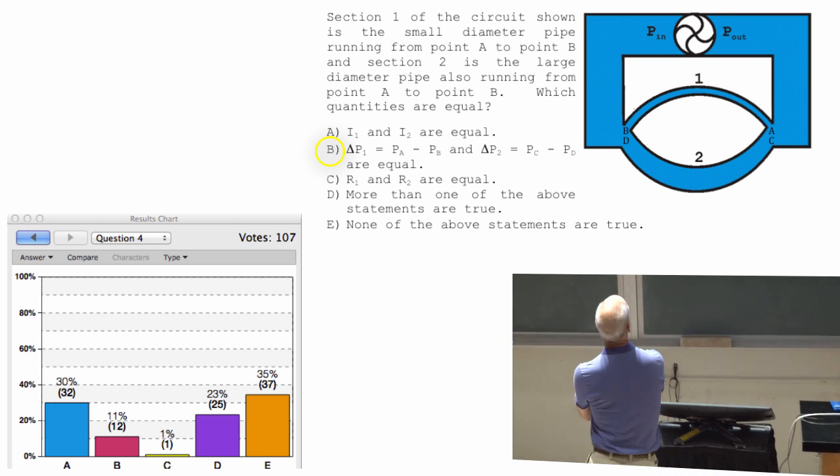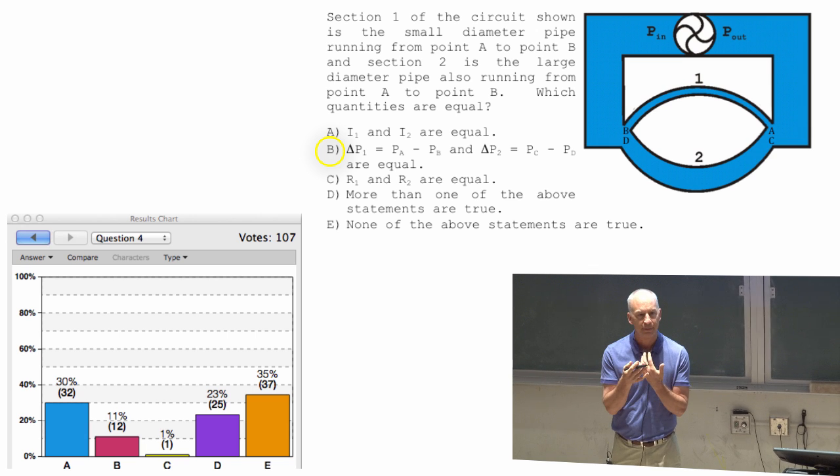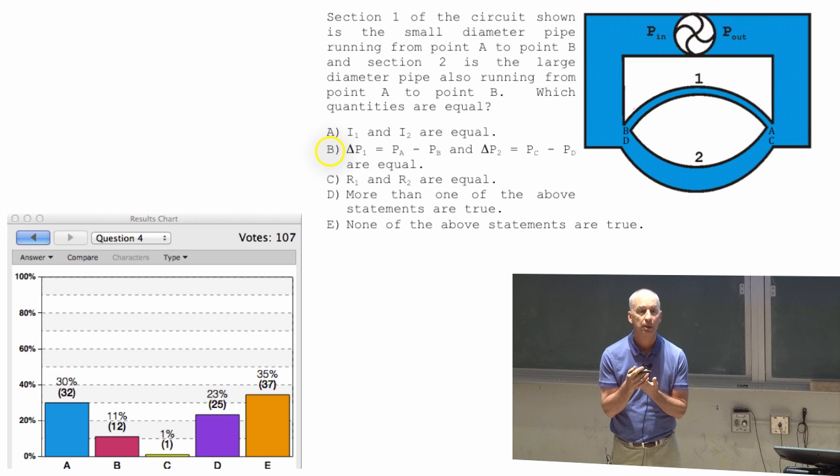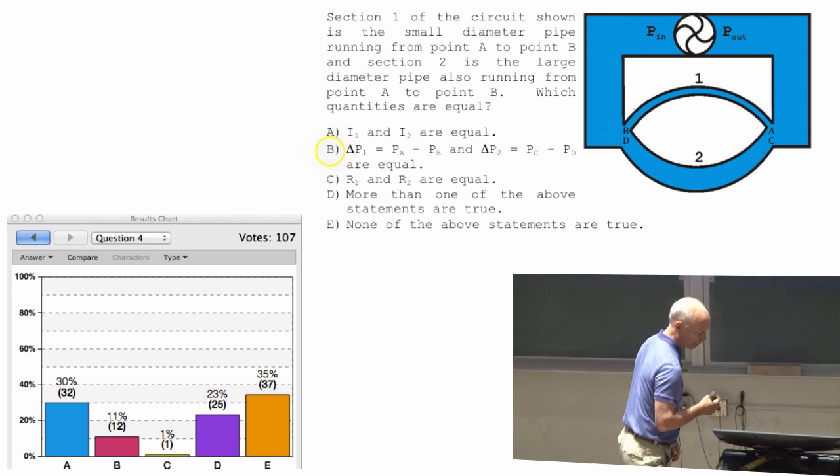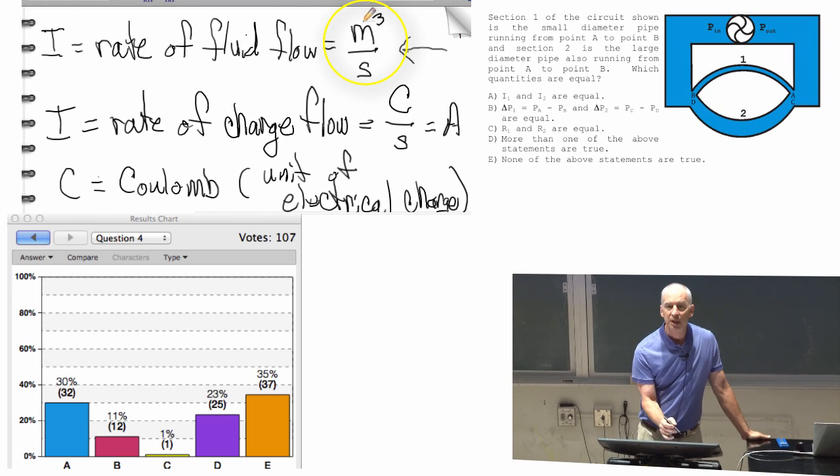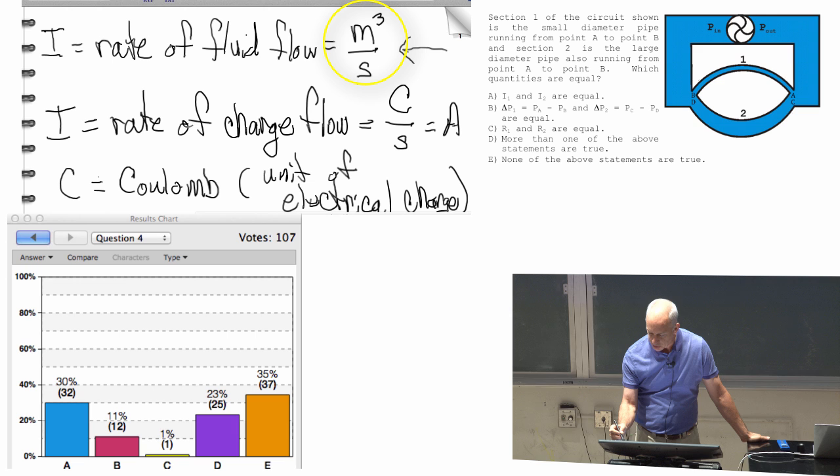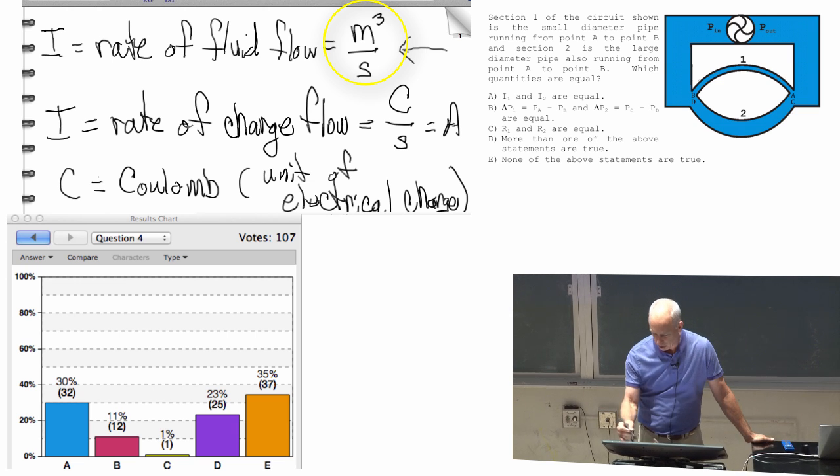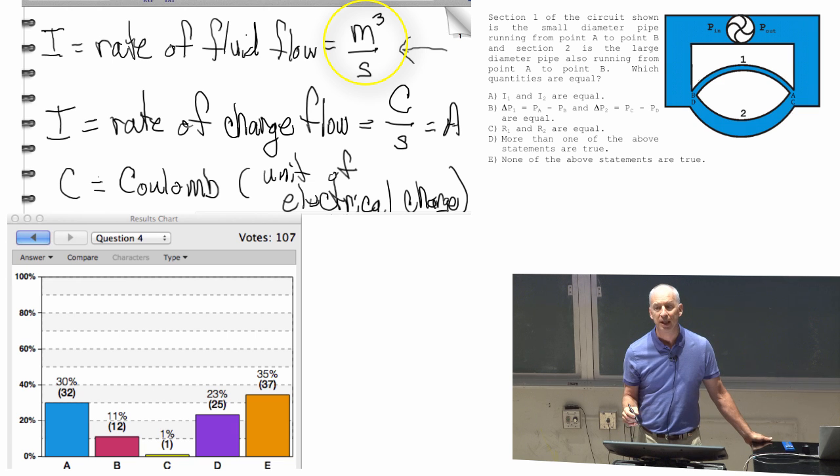Current is always amount of fluid flowing. How much, the current is the volume, it's cubic meters per second. It's the amount, how much fluid every second goes across that, not goes across that, but flows past any one point there.